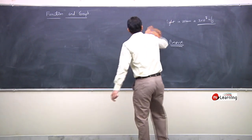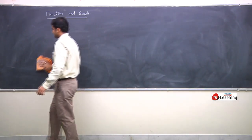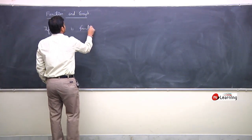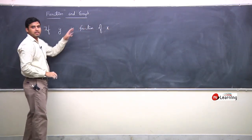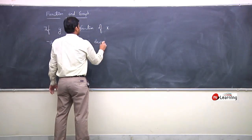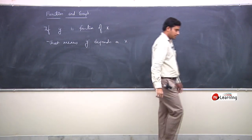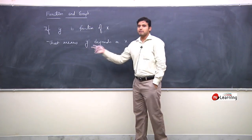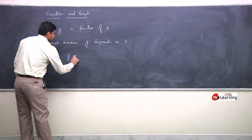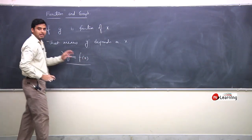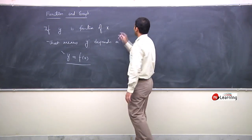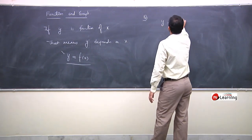Variable quantities are related through functions. In the language of mathematics, if y is a function of x, that means y depends on x. Both y and x are variables in relation. Mathematically we write y = f(x). For example, take the relation y = x² + 2. When x is 0, y becomes 2; when x is 1, y changes. So when x changes, y also changes.